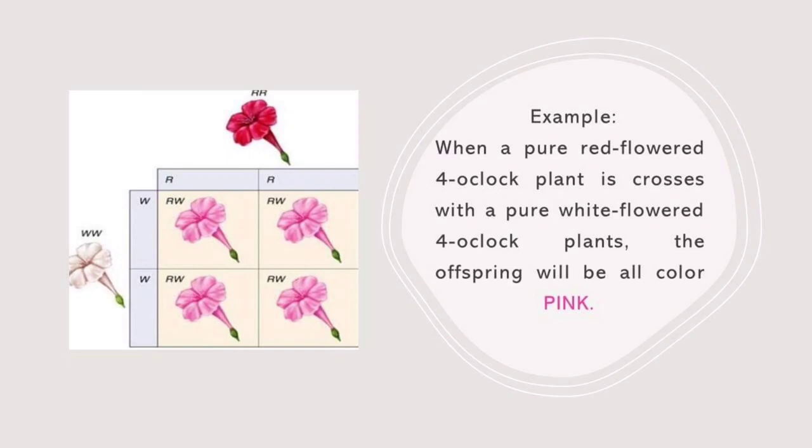For our example of incomplete dominance, when a pure red-flowered four o'clock plant is crossed with a pure white-flowered four o'clock plant, the offspring will all be pink — meaning a combination of both colors.